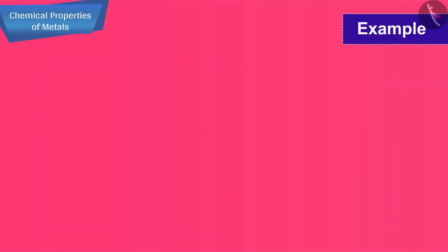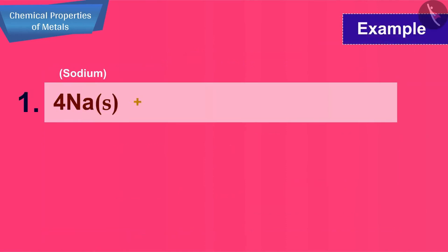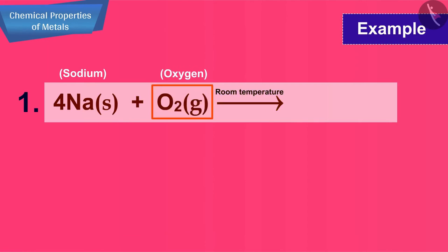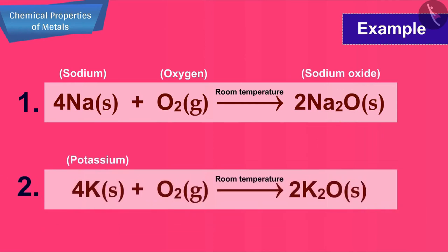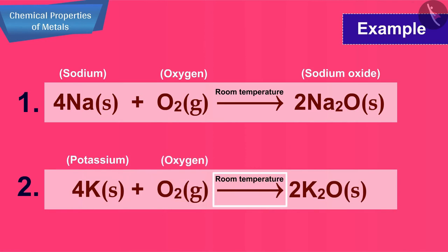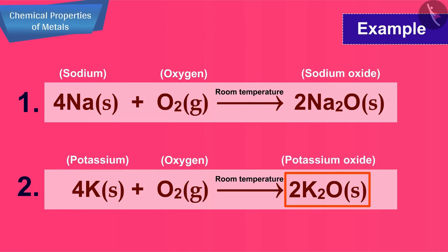For example: 1. Sodium metal reacts with the oxygen of air at room temperature to form a basic oxide called sodium oxide. 2. Potassium metal also reacts with oxygen of air at room temperature to form a basic oxide, potassium oxide, K₂O.